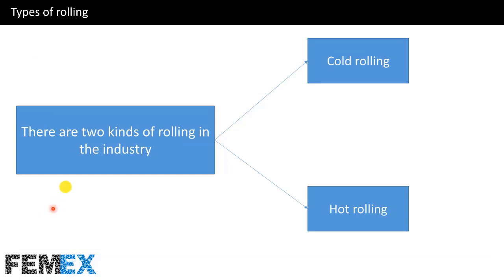There are two kinds of rolling in industry: cold rolling process and hot rolling process.